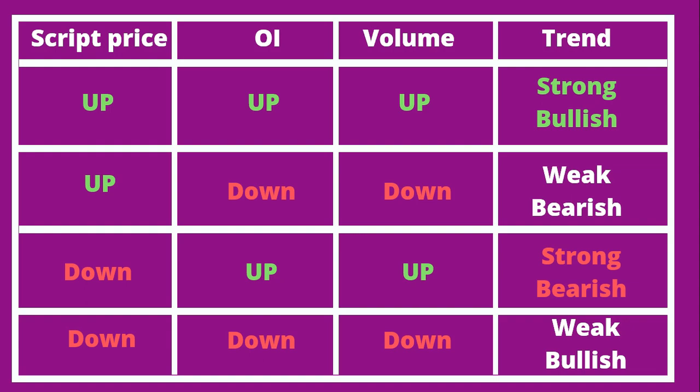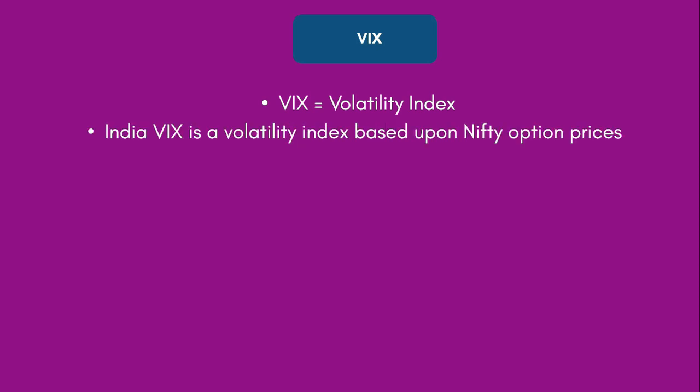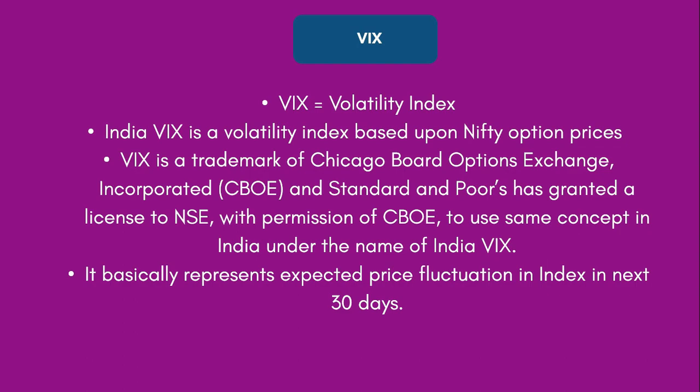The next topic is VIX — volatility index. It basically tells you how volatile your index is. In India, VIX is named India VIX and focuses only on nifty option prices, checking the volatility of nifty option prices. VIX was first incorporated in the Chicago Board of Options Exchange. In the Indian market it is offered under the name India VIX by the same CBOE exchange. VIX represents the expected price fluctuation in the index in the next 30 days — how much price fluctuations can we expect in option prices as well as nifty price.